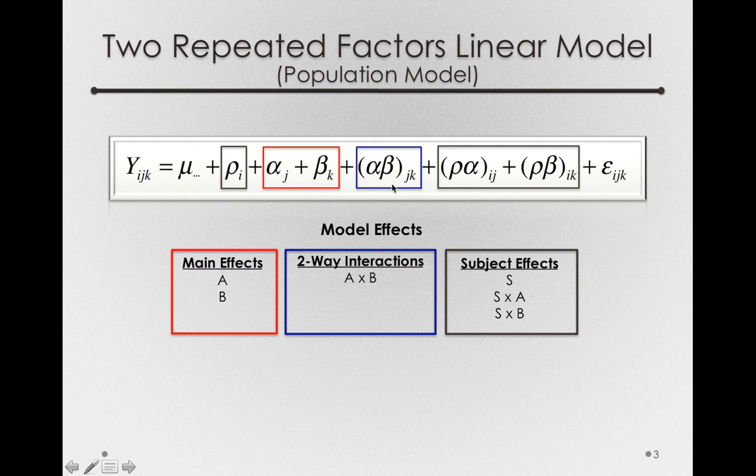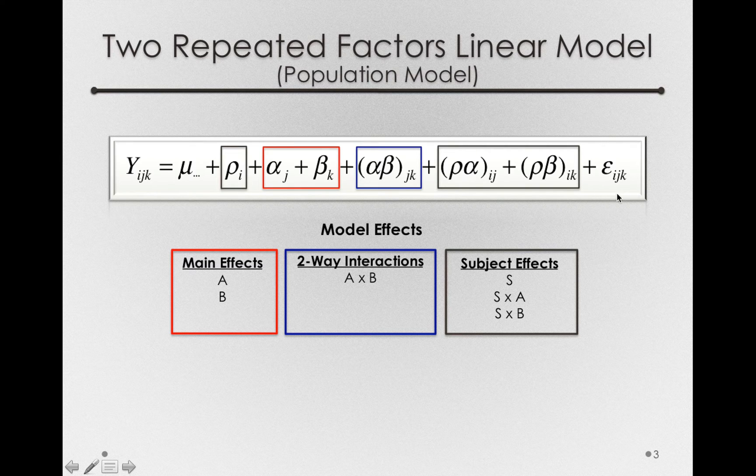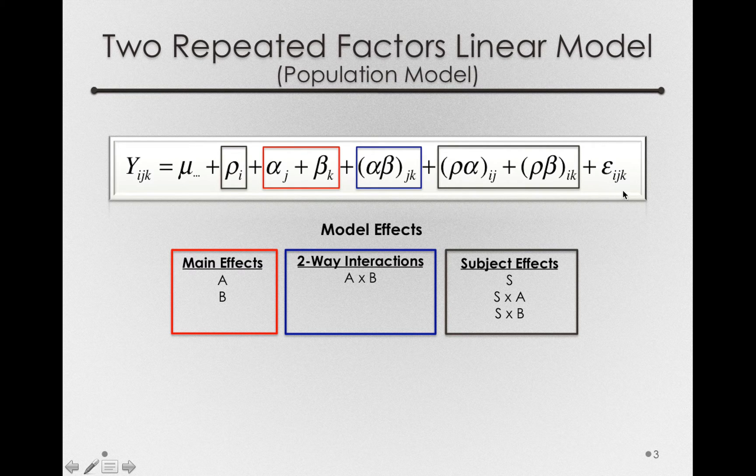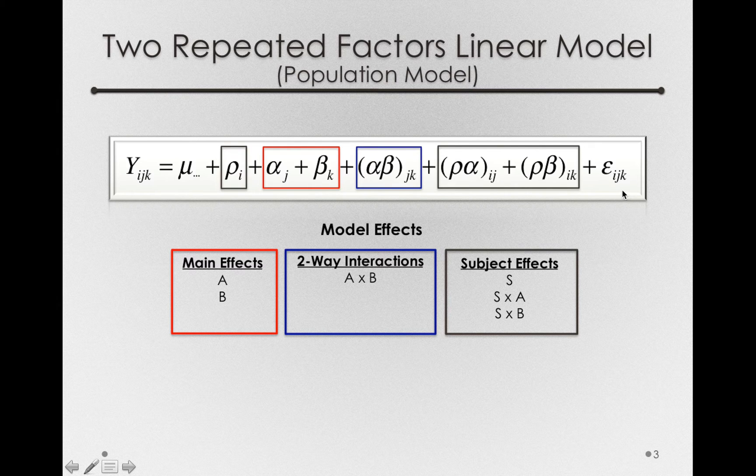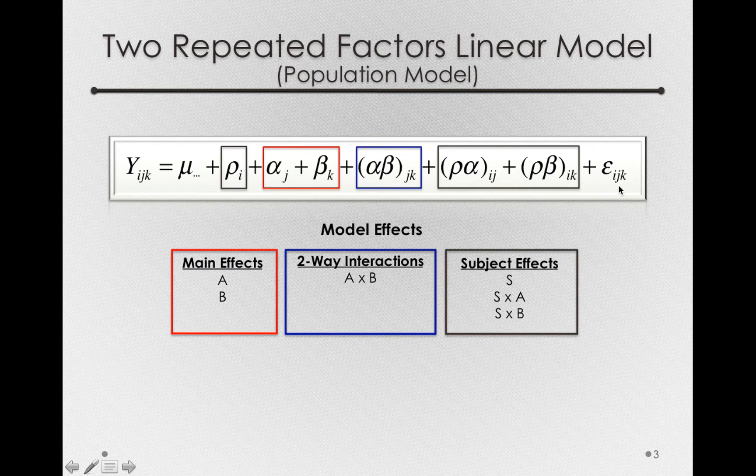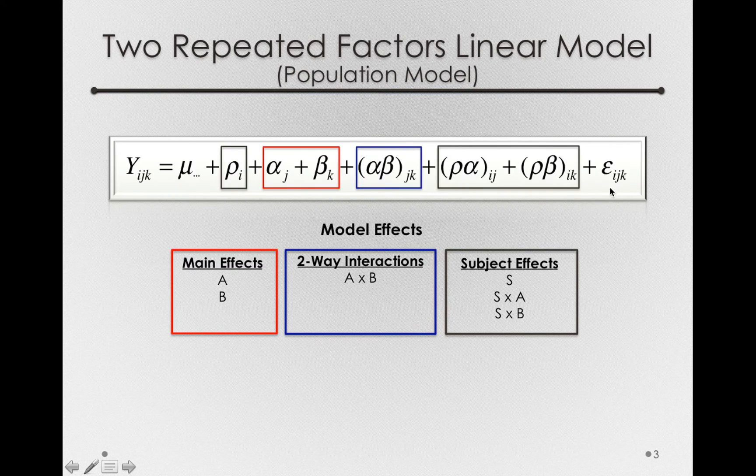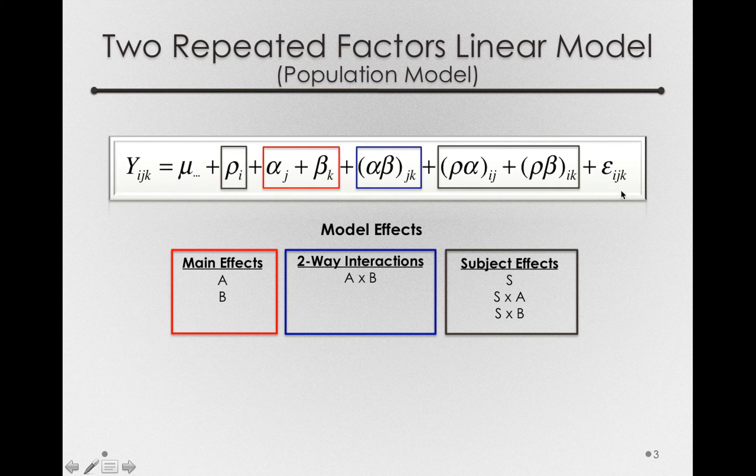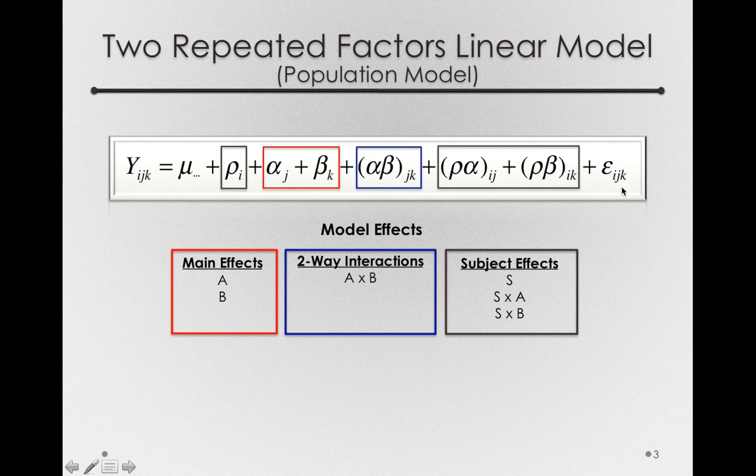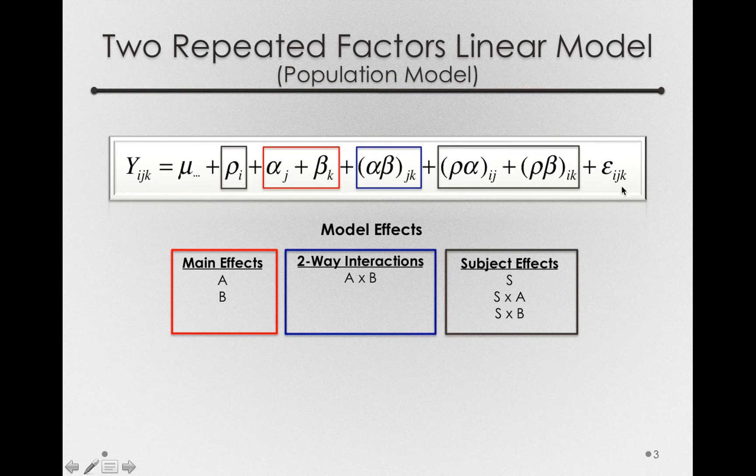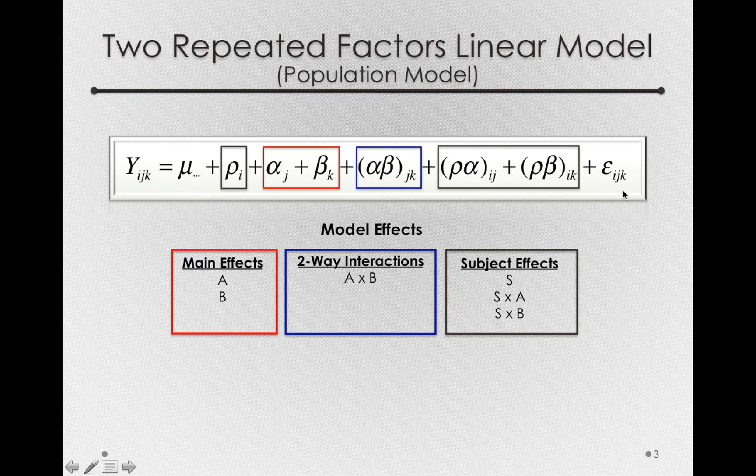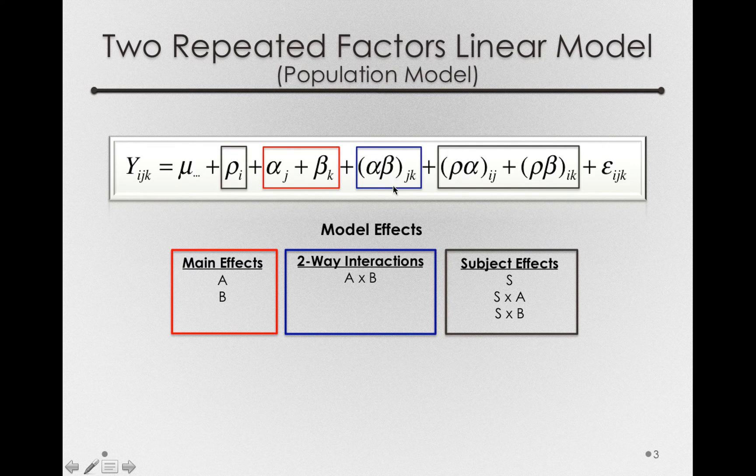Now, the two-way interaction has its own error term as well. It's the epsilon ijk here. Now, as we saw in the previous one-factor linear model, eijk is actually an interaction term itself. It is actually the row by alpha by beta term. We don't normally call it that. It's simply the residual or error in the model. But it is, again, the relevant error term for knowing whether the alpha beta, the interaction of our fixed effects, is actually big or small.